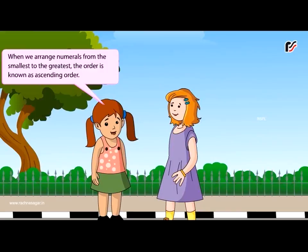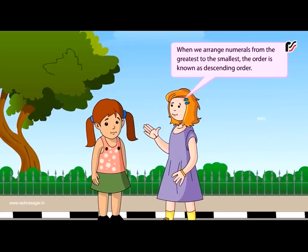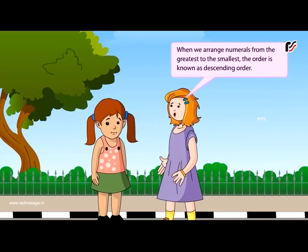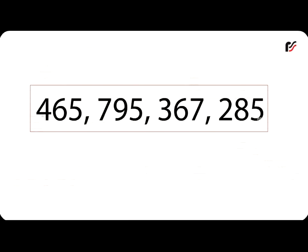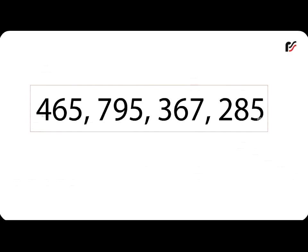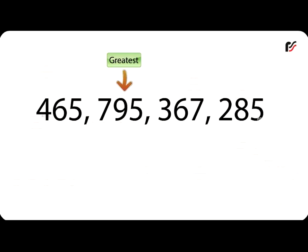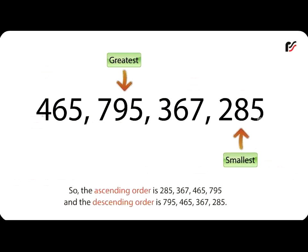When we arrange numerals from the smallest to the greatest, the order is known as ascending order. For example, given the numbers 465, 795, 367, and 285: the greatest number is 795 and the smallest is 285. The ascending order is 285, 367, 465, 795. And the descending order is 795, 465, 367, 285.